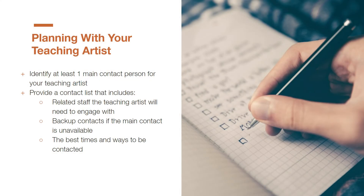To keep communication open, identify at least one main contact person for the teaching artist who will be the person the teaching artist can always communicate with if they need support or have questions. Provide a contact list of all related staff the artist may need to engage with, who can also be additional people to call if the main contact is unavailable. Identify the best times and ways to be contacted.